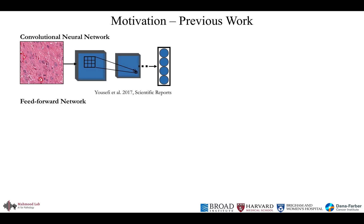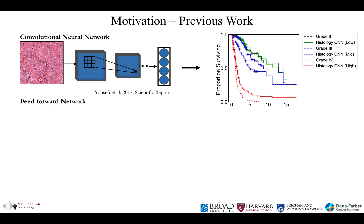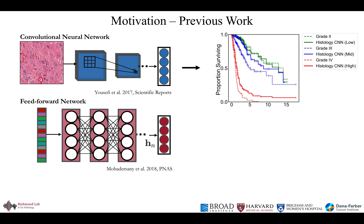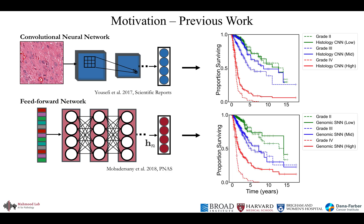Currently in computational pathology, the standard approaches using machine learning for survival have been unimodal deep learning — network architectures that only process one modality. Either morphological features from histology images are extracted via CNNs, or genomic features are processed via multilayer perceptrons. The predicted risks of these networks are then used to stratify patients, as seen on the right-hand side. The motivation of our work is that histology and genomics each explain some variance of survival; however, by themselves, they do not paint the full picture.